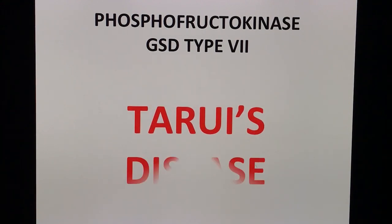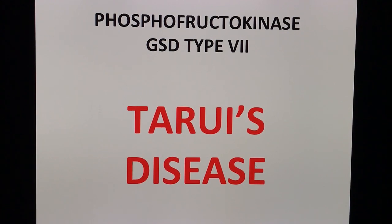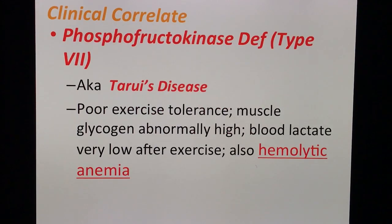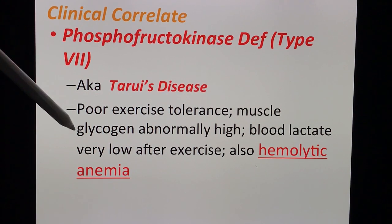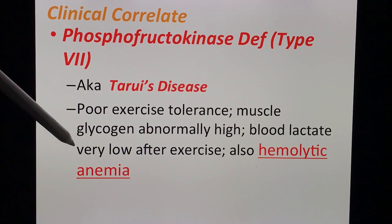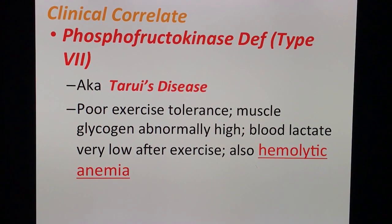The last glycogen storage disease for this module is Tarui's disease — phosphofructokinase deficiency. Tarui's disease also presents with poor exercise tolerance, just like McArdle's. The blood lactate is also very low, and muscle glycogen is abnormally high. What differentiates this from the other glycogen storage diseases is the presence of hemolytic anemia.